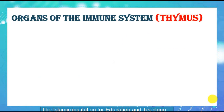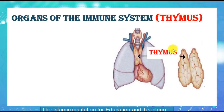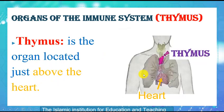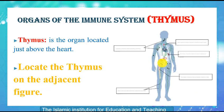The second organ of the immune system is the thymus. The thymus is the organ located just above the heart, as shown in the figure. Please locate the thymus on this figure.